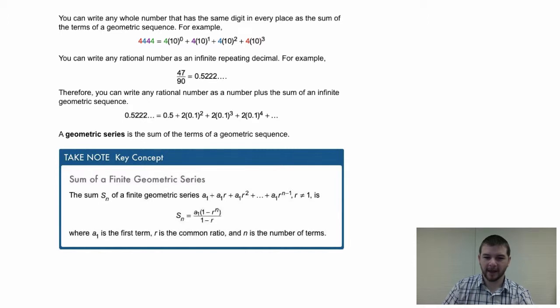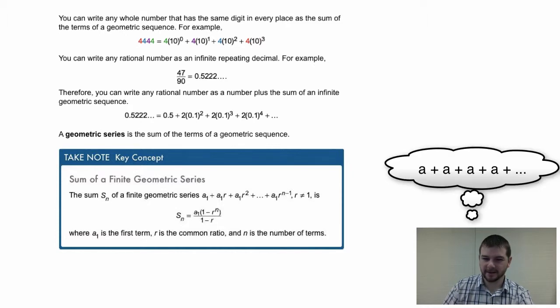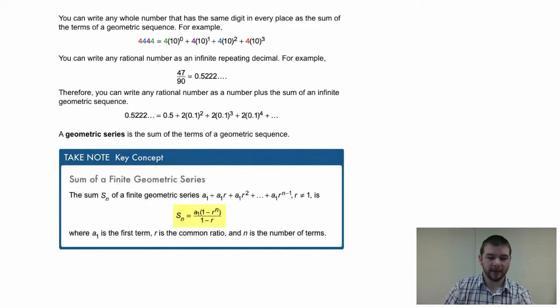Where r cannot equal 1. Think for a moment, if our common ratio is 1, how uninteresting that geometric series is. S sub n equals a sub 1 times the quantity 1 minus r to the n power over 1 minus r. Definitely get that in your notes. Where a sub 1 is the first term, r is the common ratio, and n is the number of terms in the series.